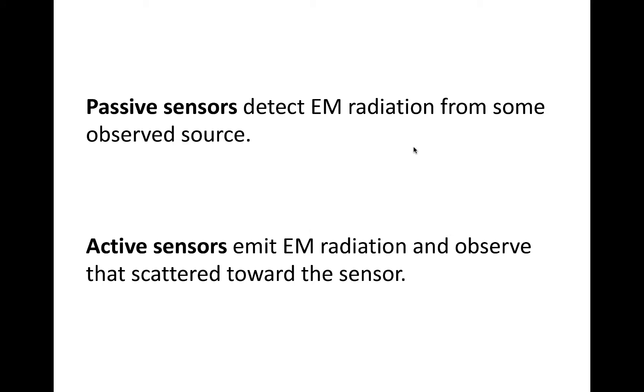So far in this course, we've learned about passive sensors, those that detect radiation that is scattered off of or emitted by Earth's surface or atmosphere. Active sensors, in contrast, transmit their own signal and use the return power from that signal to infer some property of the surface.